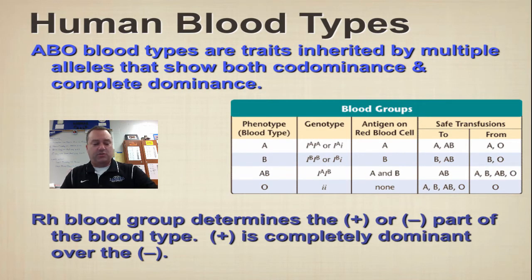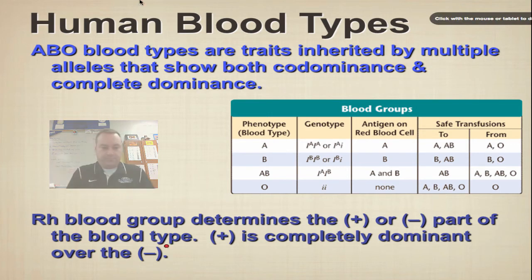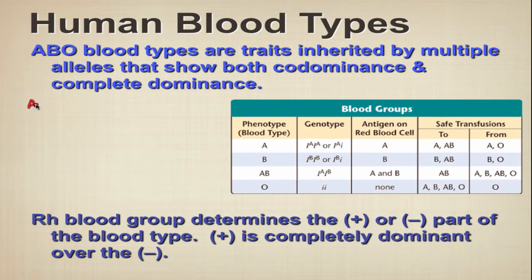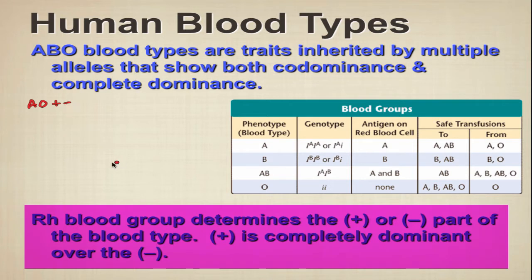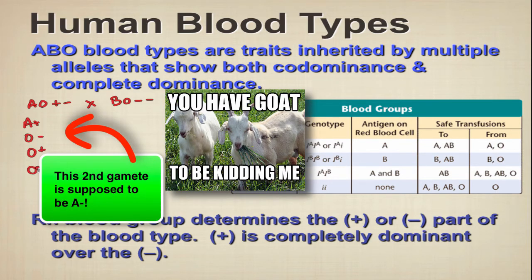The ABO blood types — this is one of the concepts we've been struggling with. Let's do a sample problem. We've got an individual that is AO, so it's type A but carries the O allele, and it has the positive RH factor, so this one is A positive. We're going to cross it with somebody who's B negative. The only way you can be negative is you've got to have two alleles. Even though we've got symbols that aren't letters, you're still going to do the FOIL method — First, Outside, Inside, Last of each pair.